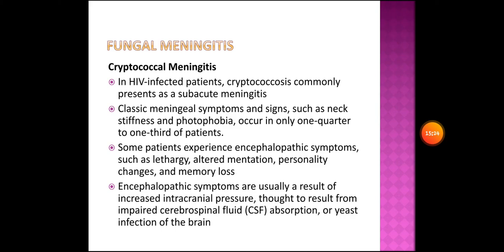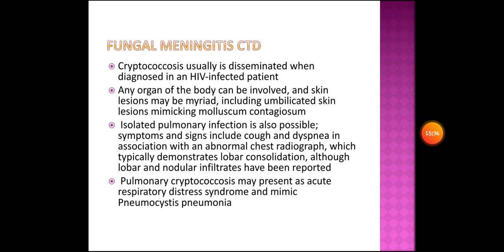Encephalopathic symptoms are usually a result of increased intracranial pressure, thought to result from impaired cerebrospinal fluid absorption or yeast infection of the brain. Cryptococcosis is usually disseminated when diagnosed in an HIV-infected patient. Any organ of the body can be involved; skin lesions may include umbilicated lesions mimicking molluscum contagiosum. Isolated pulmonary infection is also possible, with symptoms including cough and dyspnea with an abnormal chest radiograph.